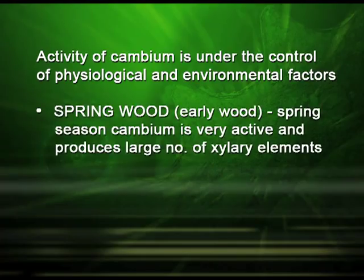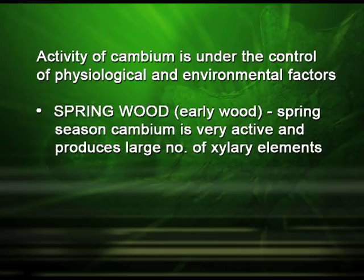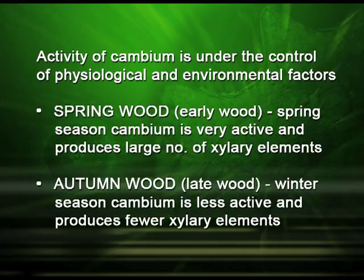The spring wood is generally found in the spring season where the cambium is very active and it produces a large number of xylem elements. It is also known as the early wood. The autumn wood is also called the late wood, which generally develops in the winter season where the cambium is less active and produces fewer xylem elements.